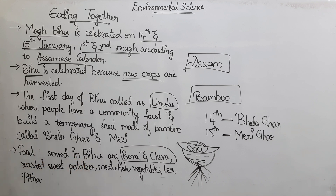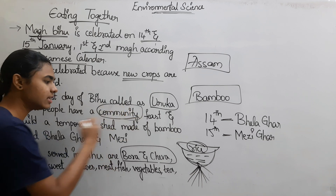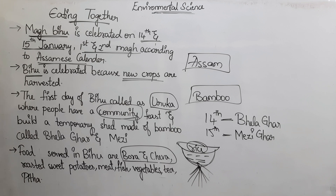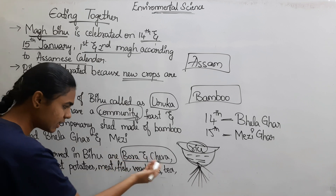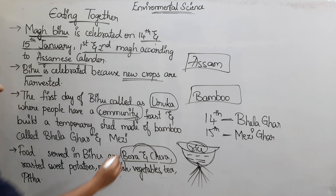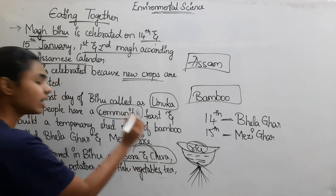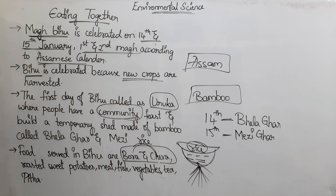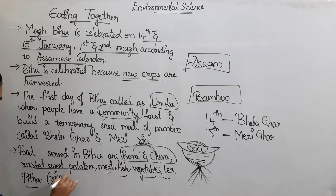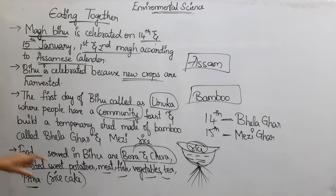At the Bihu festival, we serve food to the community. The food items include roasted sweet potatoes, sweet potatoes, meat, fish, vegetables, tea, and pitha — pitha is a rice cake type. We serve these food items for lunch and dinner.